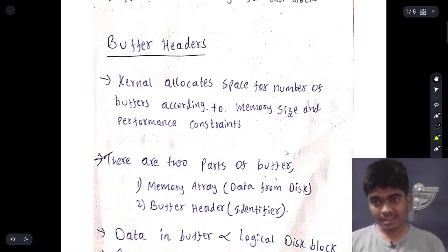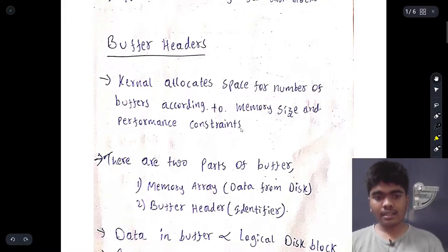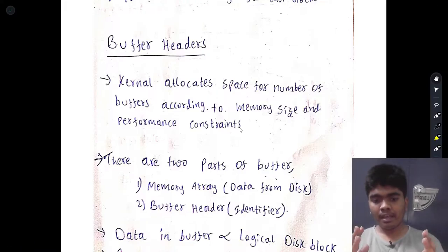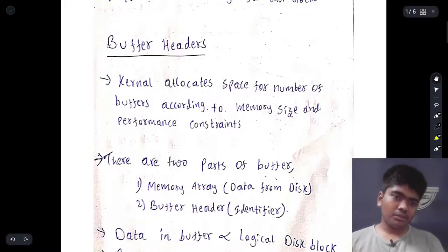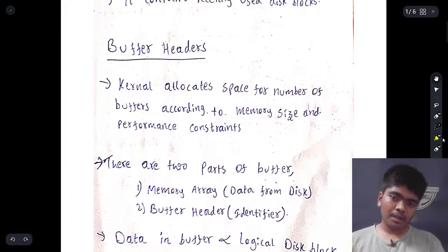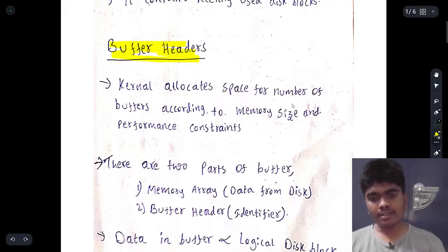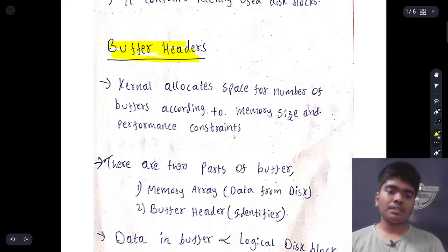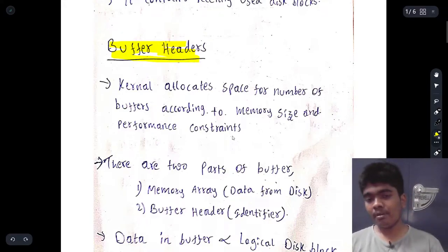Now let's get into buffer headers. For each buffer in the cache, there is a particular way of arranging things. The kernel allocates space for a number of buffers according to the memory size and performance constraints. It depends upon the particular application.